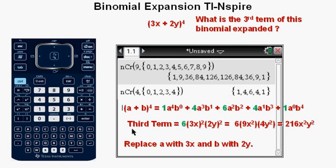And multiplying all the numbers together, we get 216X squared Y squared, which we box in as our correct answer for this, the third term.